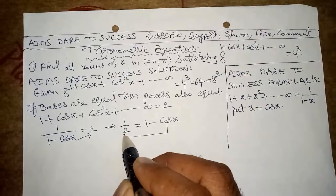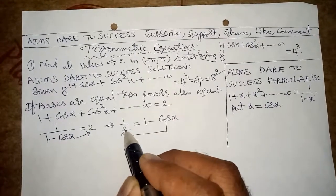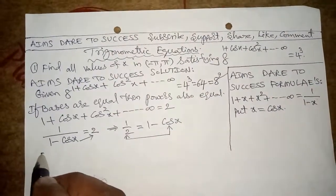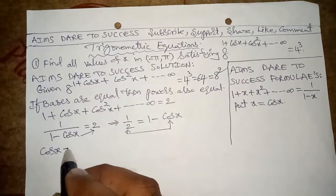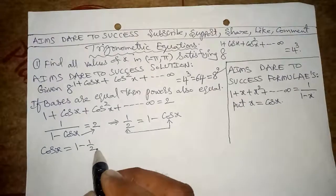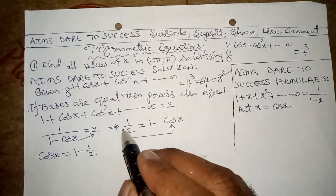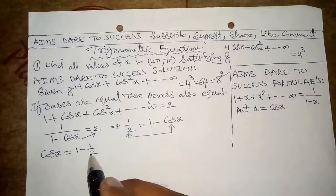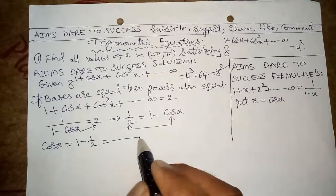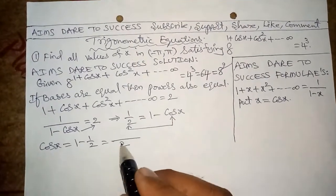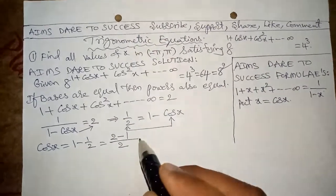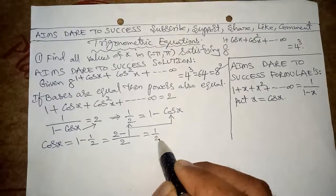Cos x = 1 − 1/2. So take LCM, we get 1/2.